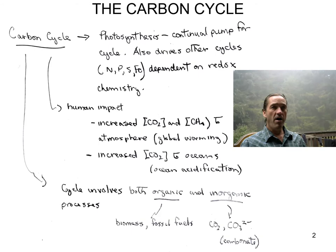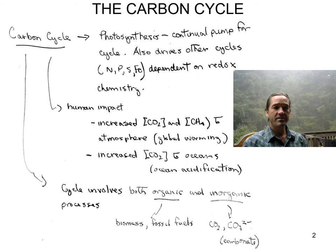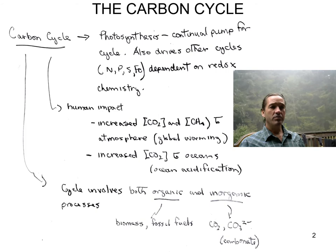Not only does photosynthesis drive the carbon cycle, but it also drives geochemical cycles of other redox-active elements such as nitrogen, phosphorus, sulfur, and even iron. So a lot of these geochemical cycles are tied together.